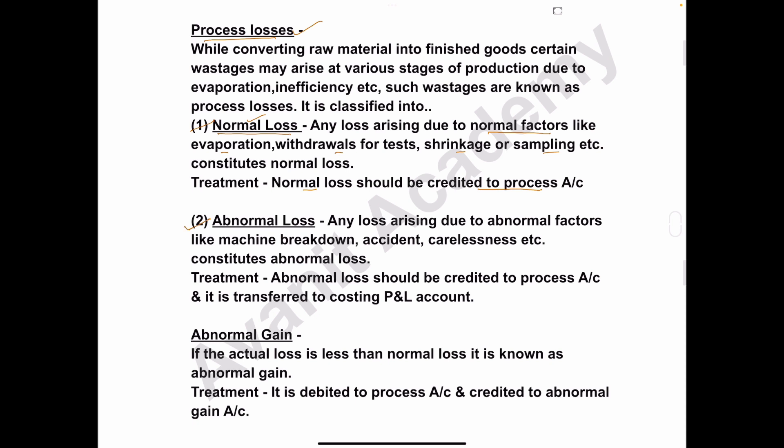Second is abnormal loss. Any loss arising due to abnormal factors — if the reason for the loss is abnormal like machine breakdown or accident — such losses are called abnormal loss. This abnormal loss should be credited to the process account on the credit side, and it is transferred to the costing profit and loss account. If the reason is normal like evaporation or shrinkage, it is normal loss; if abnormal like machine breakdown or accident, it is abnormal loss.